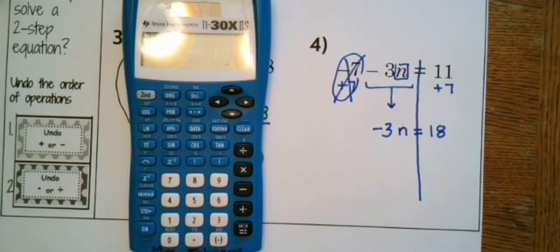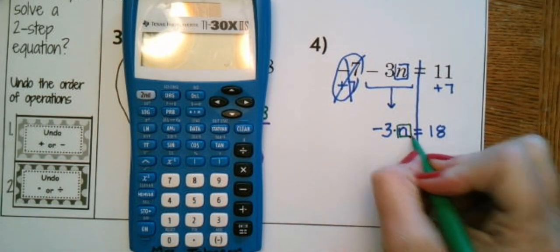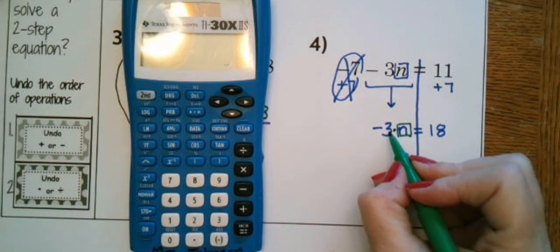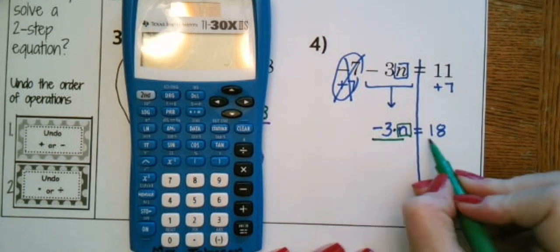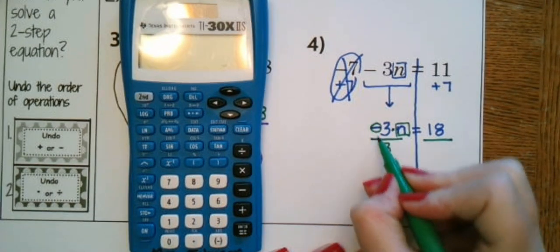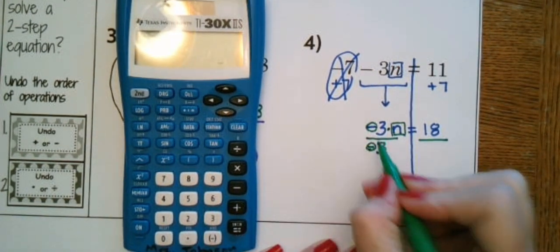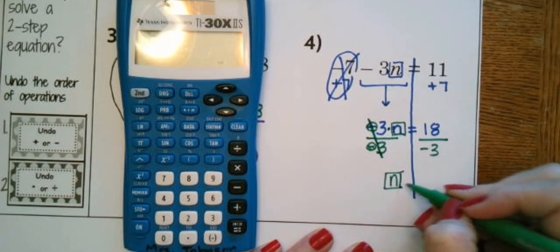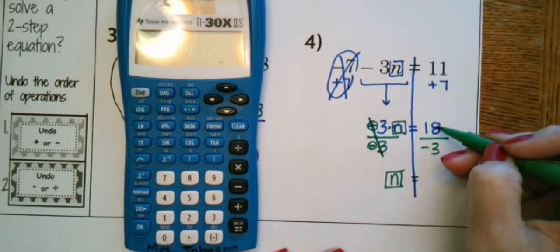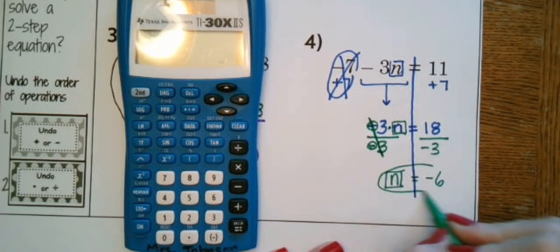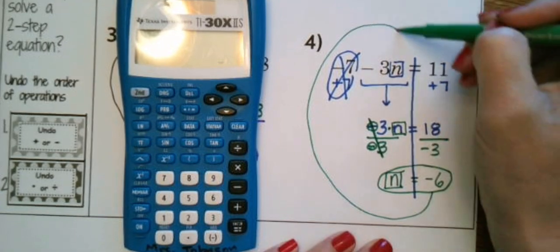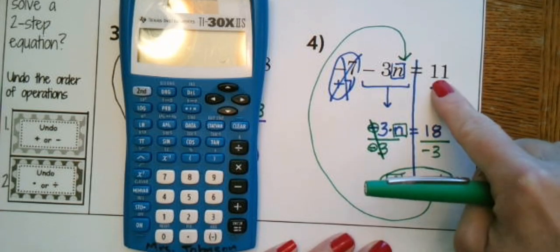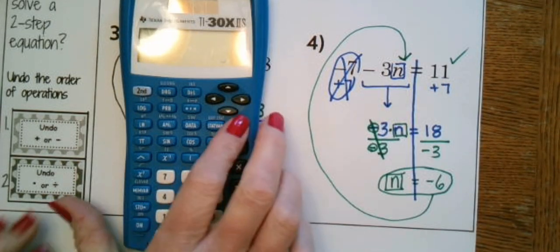Now we see multiplication. Mom comes down — party's over. We're going to send home our three BFFs with the inverse operation, which is division. Don't forget to divide by negative three, both sides — send home those closest friends and their bad attitude. Negative three divided by negative three makes 1N, leaving us by ourselves. 18 divided by negative three is negative six. That's our answer. We could go back and plug it in: negative 7 minus 3 times negative 6 in the calculator checks that it equals 11.